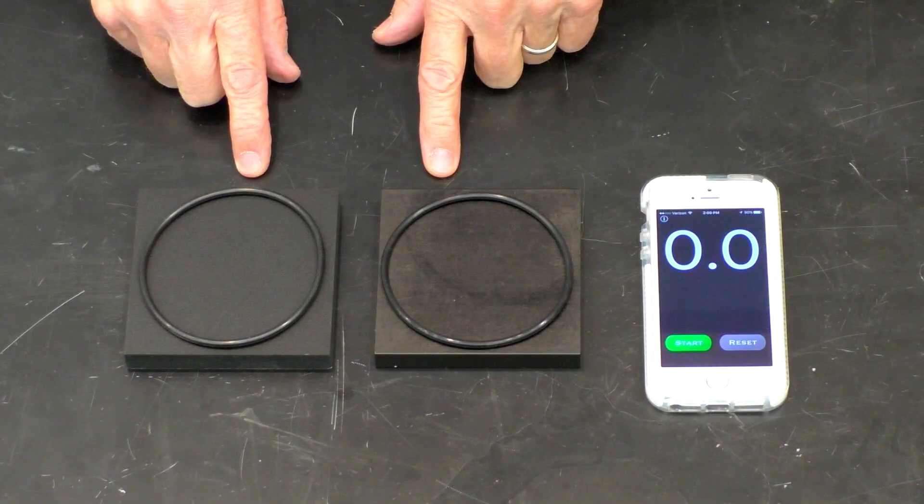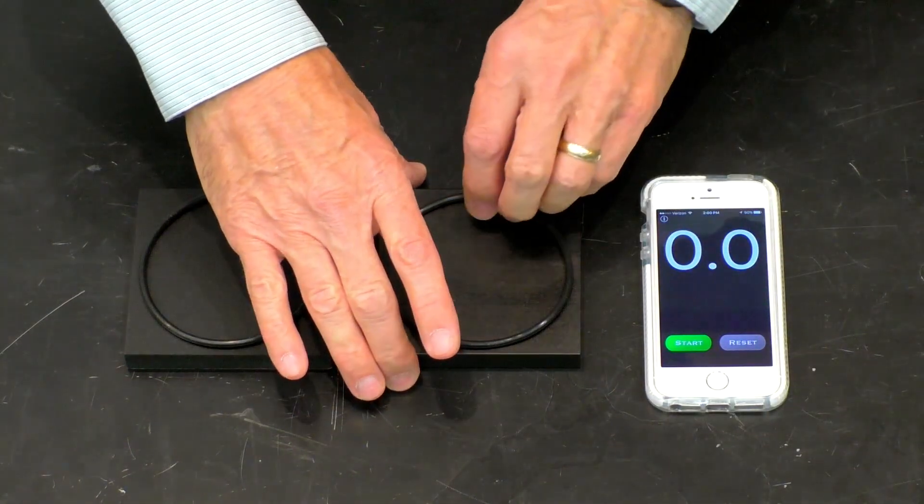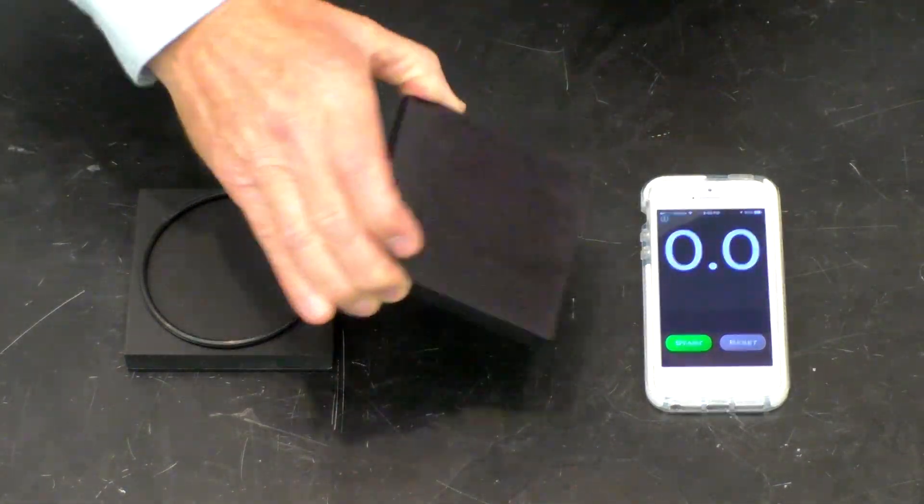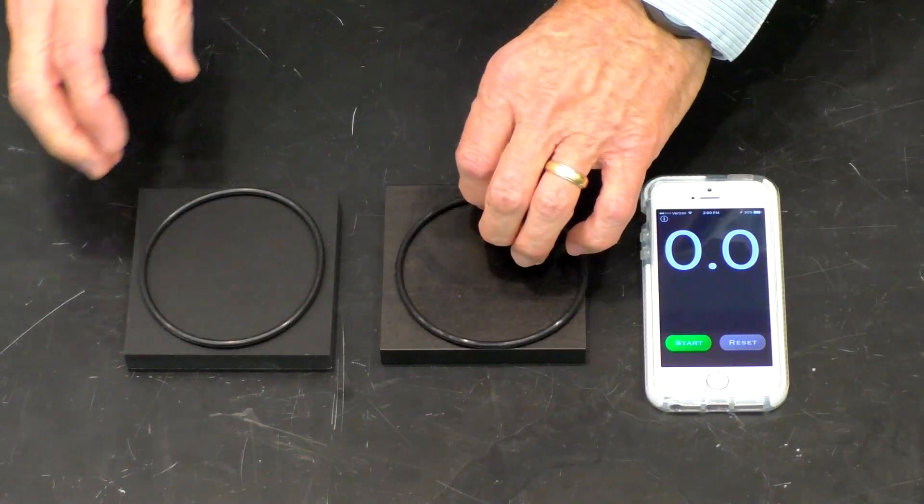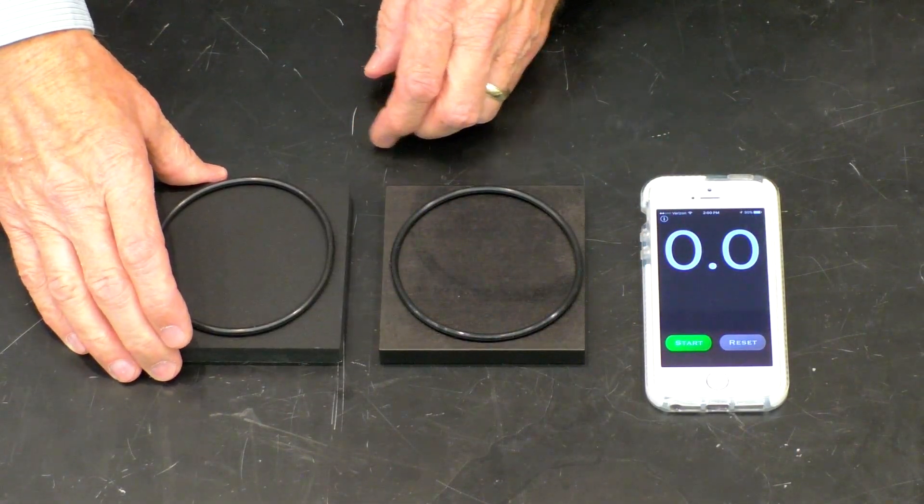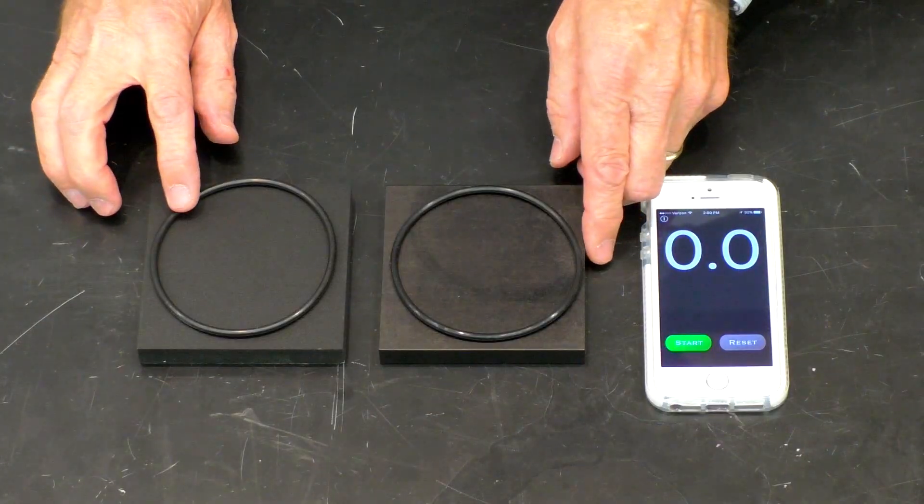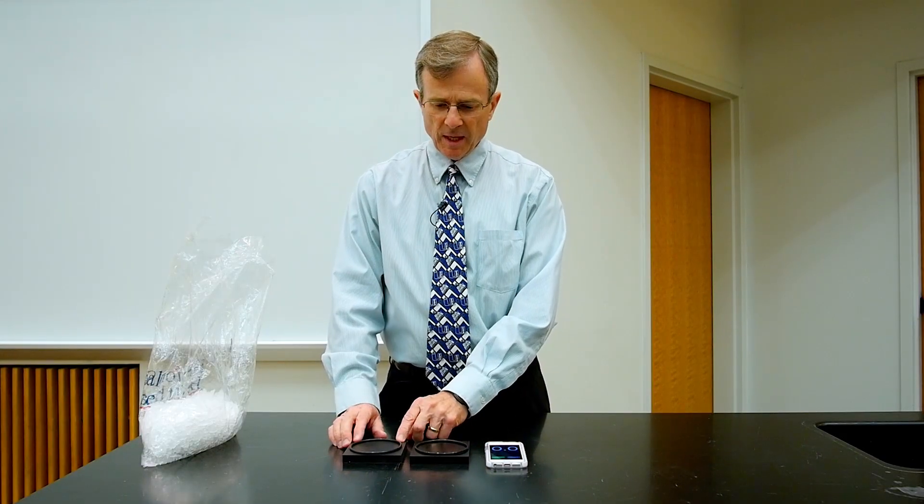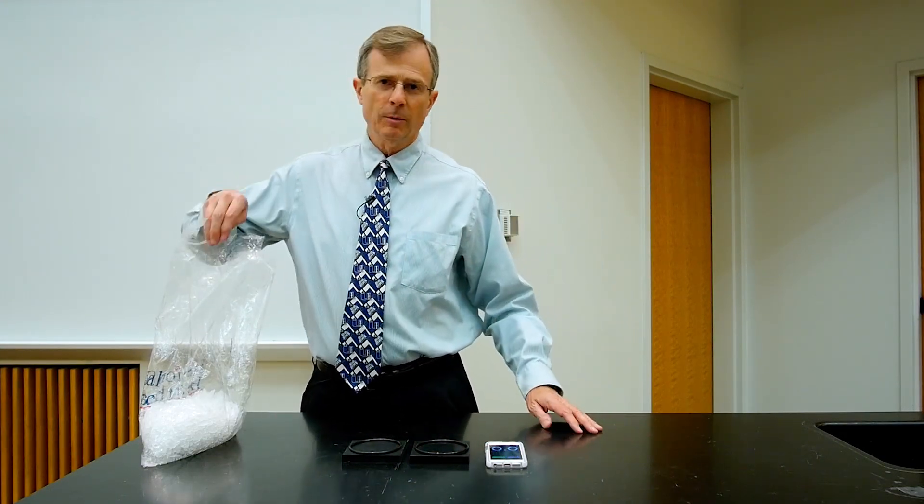Here are two materials, both pretty much the same size, both look pretty much the same. I've got an O-ring here to contain the ice, and we're going to investigate the differences in thermal conductivity.